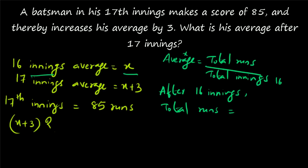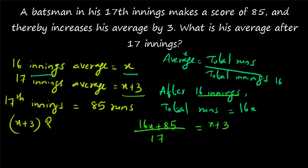His total runs are equal to 16x. He is making a score of 85 in his 17th innings, so his total runs after 17 innings will be equal to 16x plus 85. That divided by 17 will give you the new average, which is equal to x plus 3. So the equation is: 16x plus 85 divided by 17 equals x plus 3.